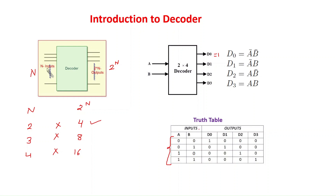A decoder decodes the actual information from binary coded words. So 00 is a binary coded word, 01 is another binary coded word, 10 is another, and 11 is another. These words are decoded in unique representations: D0 is 1 representing 00, D1 is 1 for 01, D2 is 1 for 10, and D3 is 1 for 11.